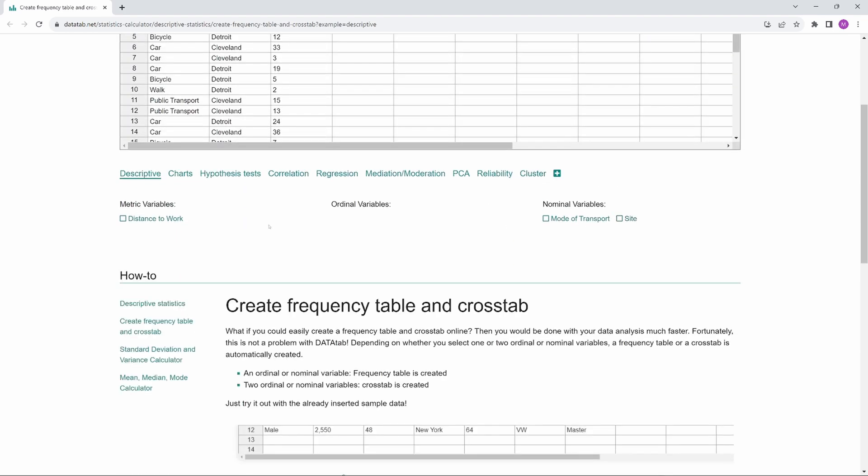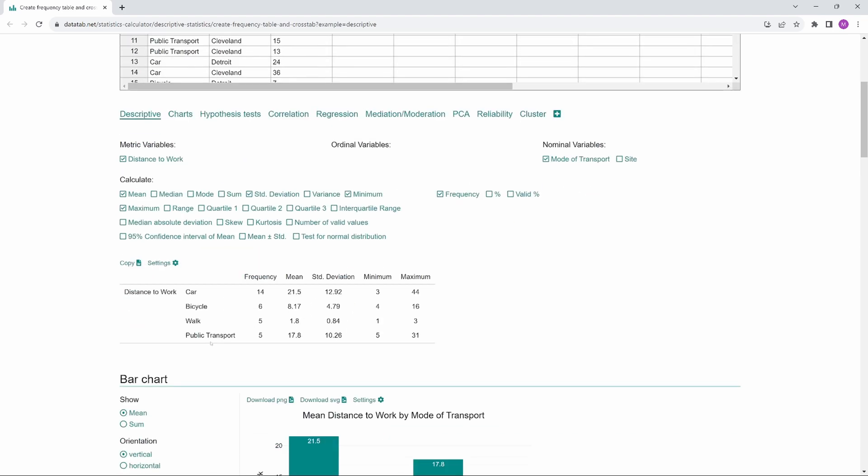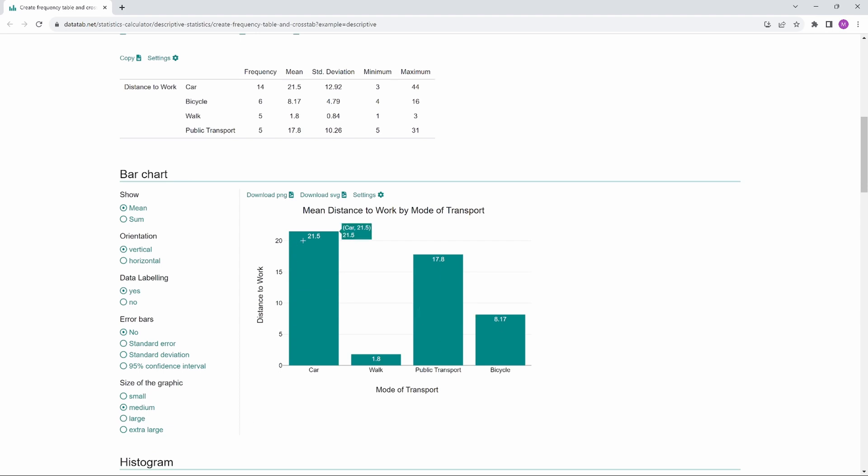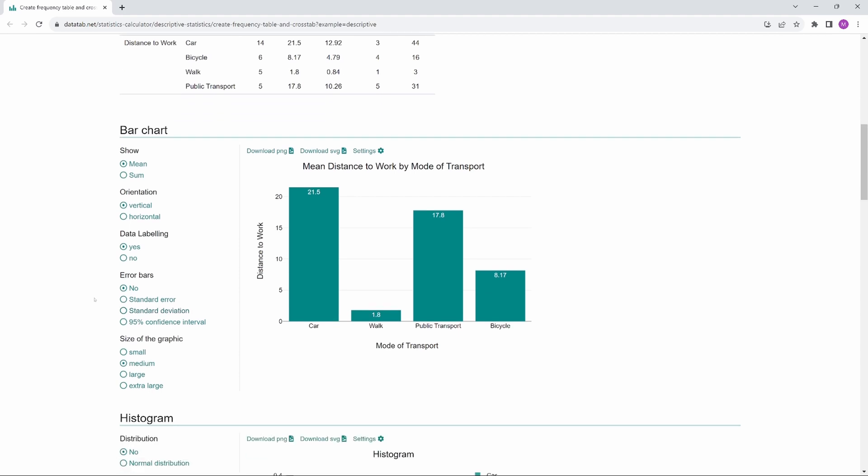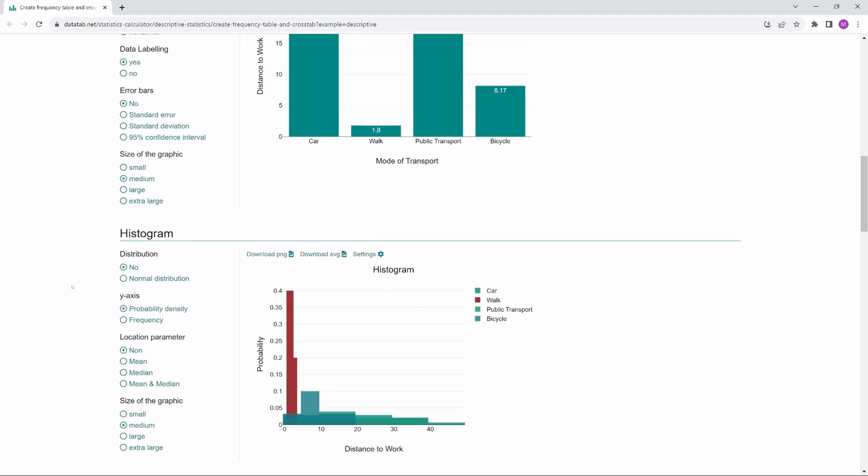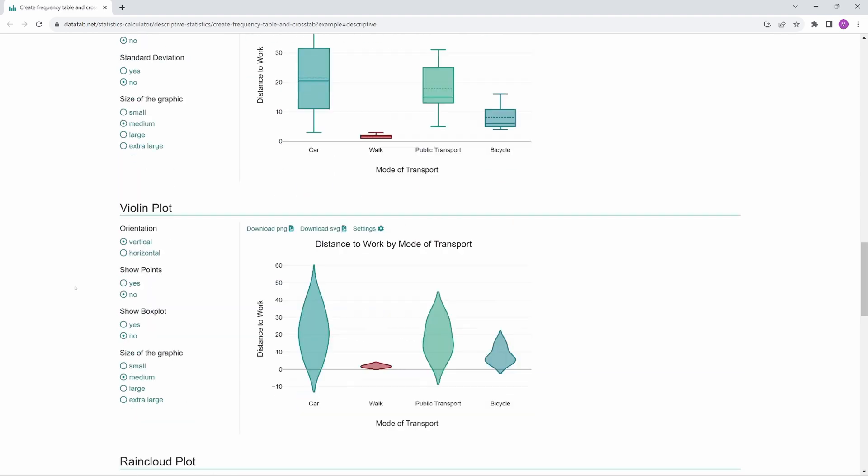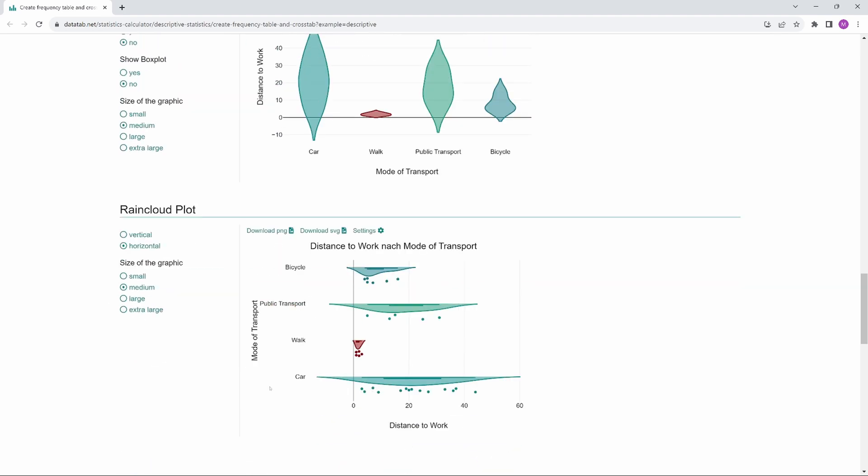If we click on distance to work and mode of transport, we get a bar chart where the height of the bar shows the mean value of the individual groups. Here we can also display the dispersion. We also get a histogram, a box plot, a violin plot and a rainbow plot.